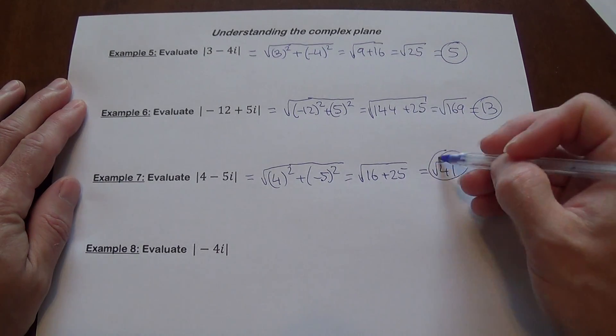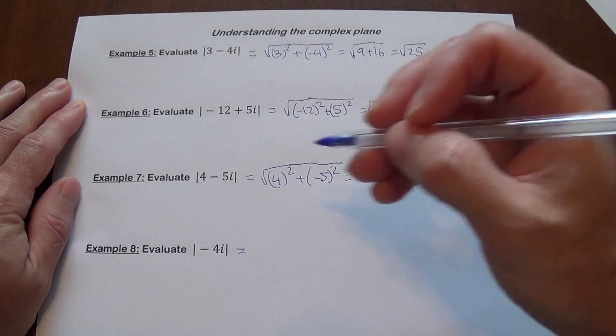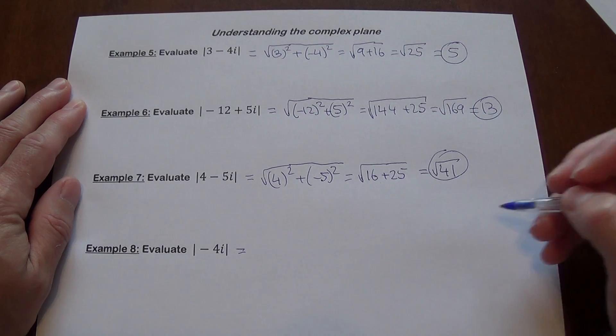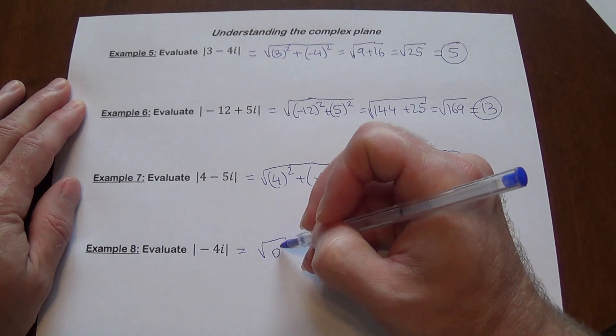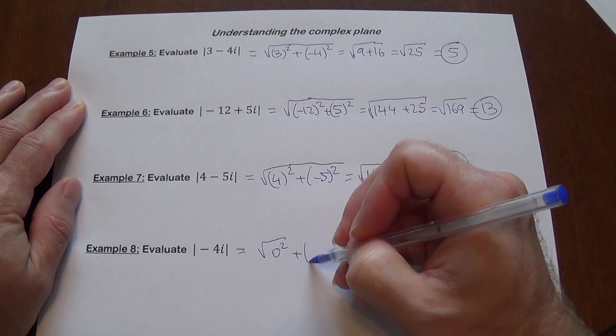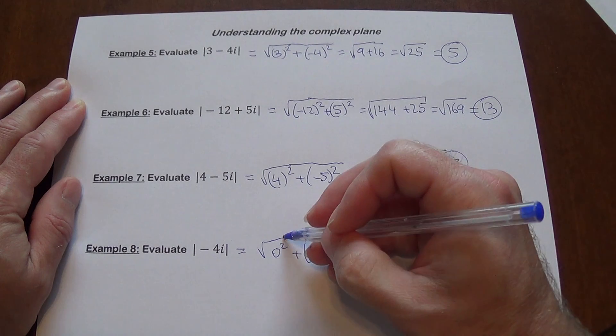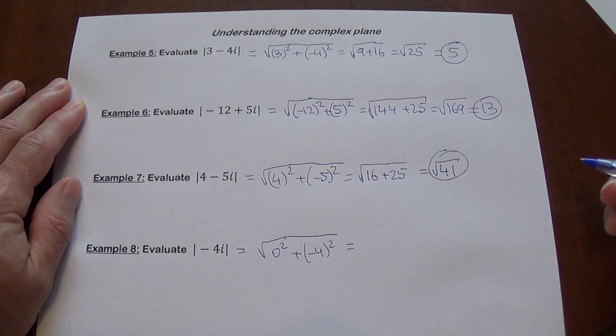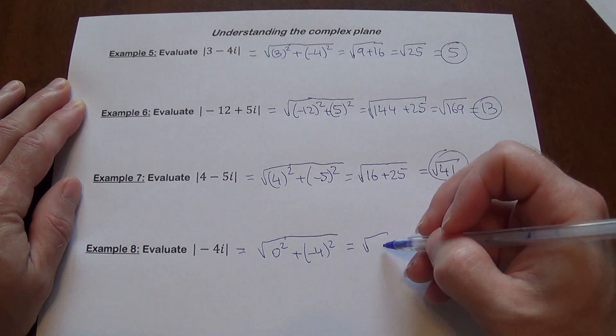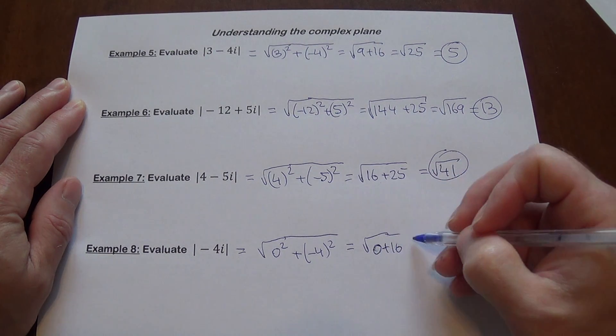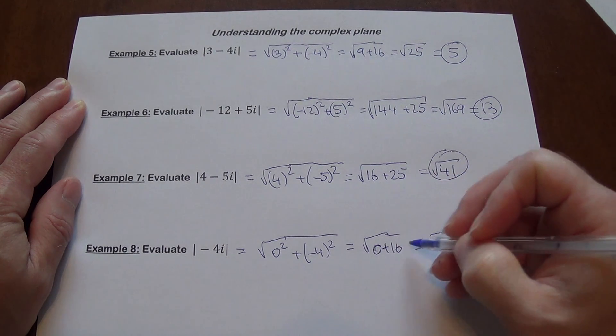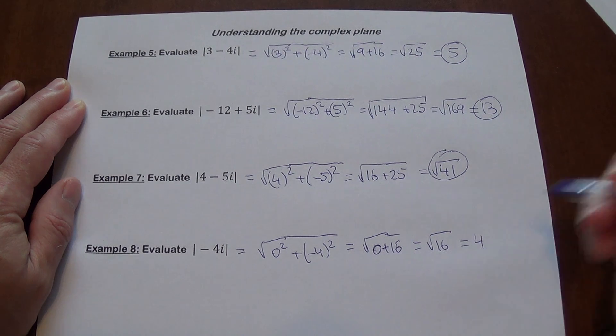And then the modulus of negative 4i. So the real part is 0, so 0 squared plus negative 4 squared. It's going to give us square root of 0 plus 16, which is square root of 16, and that's going to be 4.